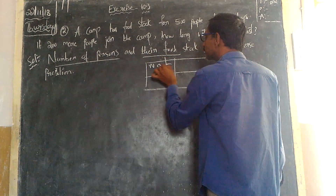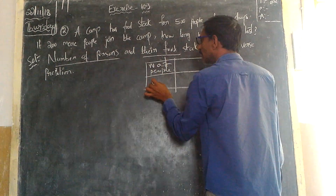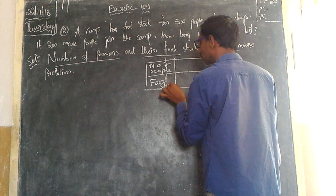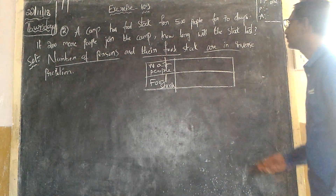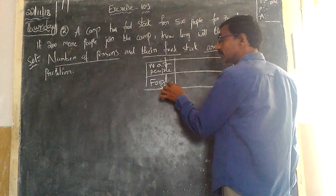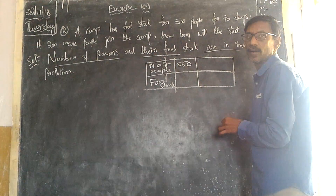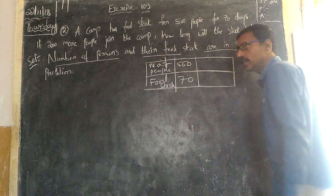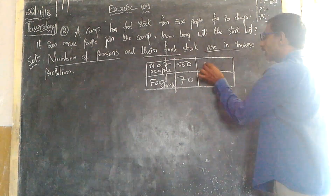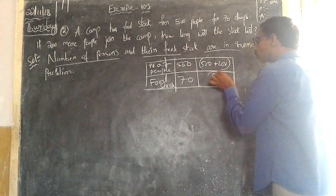The number of people. Food stock. What is the number of people? 500. What is the number of days? 70. What is the number of people? 200. That means 500 plus 200. That's the question.